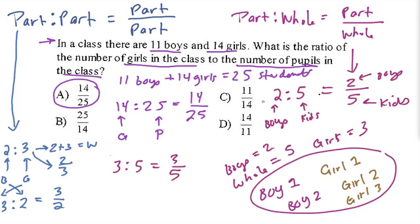Look at the other choices, though. Here, 11 to 14, that's a part-to-part ratio of boys to girls, 11 boys, 14 girls. D is a part-to-part ratio of girls to boys, 14 to 11. And B over here is a ratio of all the pupils in the class to the number of girls, so 25 to 14. And they're all correct. They're just not correct in the sense of what they're asking for. They're asking for A, the number of girls to the total pupils, 14 to 25. All right, hope that helped.